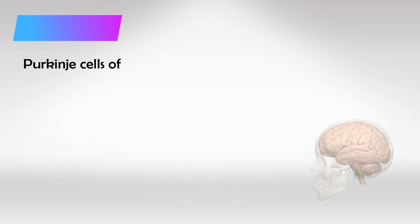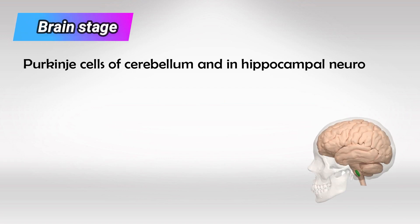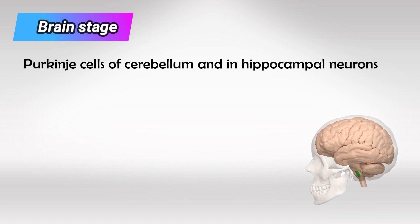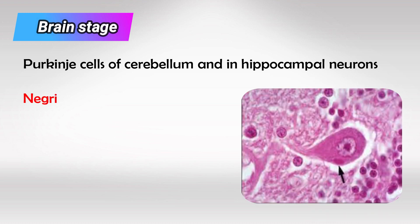Once the virus reaches the brain, it rests in the Purkinje cells of the cerebellum and the hippocampus. If we take a neuronal sample of these neurons once the infection reaches this area, we'll see the Negri bodies. These are highly characteristic black cytoplasmic inclusions.